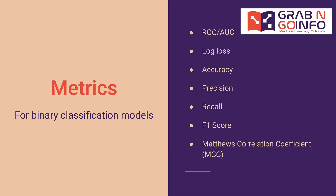There are different algorithms to evaluate a binary classification model's performance. The seven most commonly used metrics are ROC, log loss, accuracy, precision, recall, F1 score, and Matthews correlation coefficient.